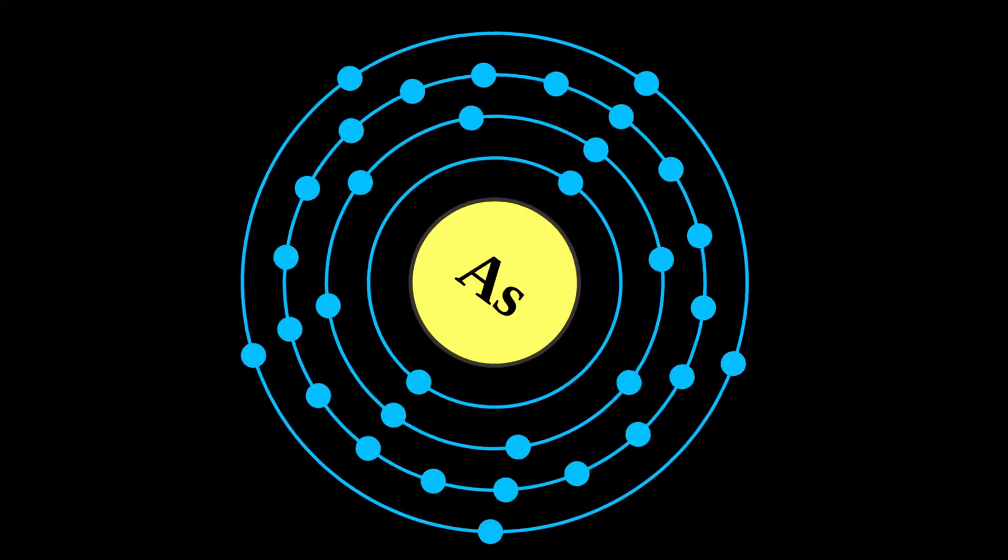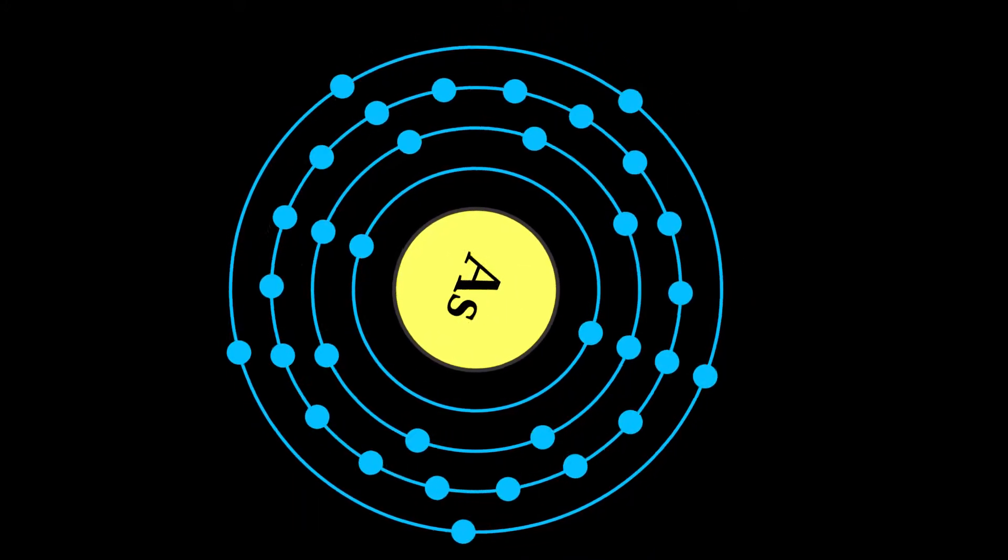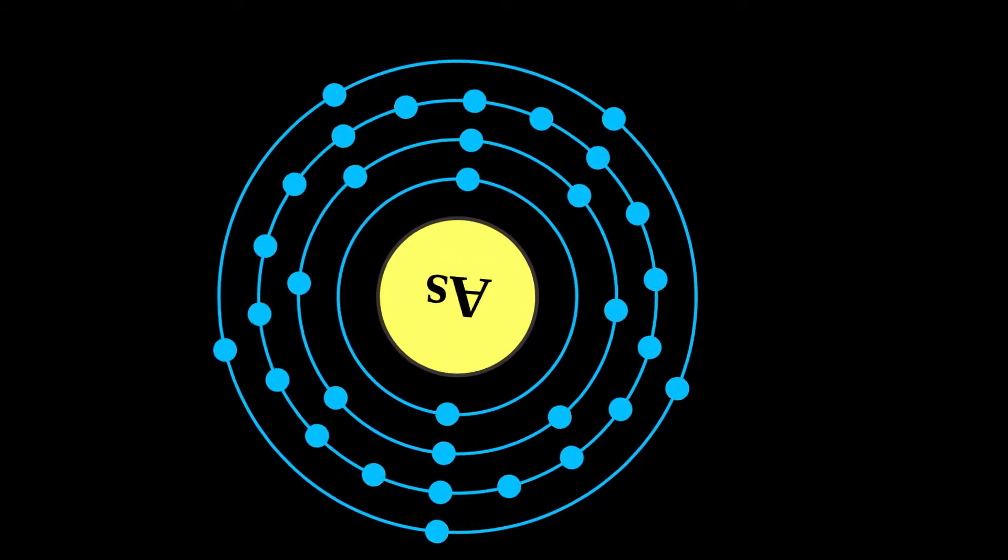Arsenic is a chemical element with symbol As and atomic number 33.